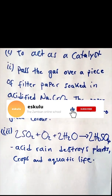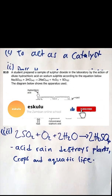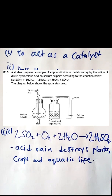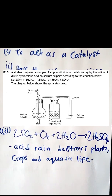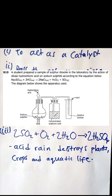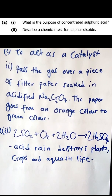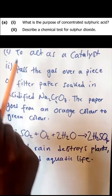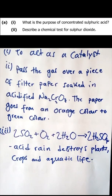Question number 10: a student prepared a sample of sulfur dioxide in the laboratory by the action of dilute hydrochloric acid on sodium sulfide according to the equation in the paper. What is the purpose of the concentrated sulfuric acid? Its purpose is only to act as a catalyst so that the reaction can be speeded up.